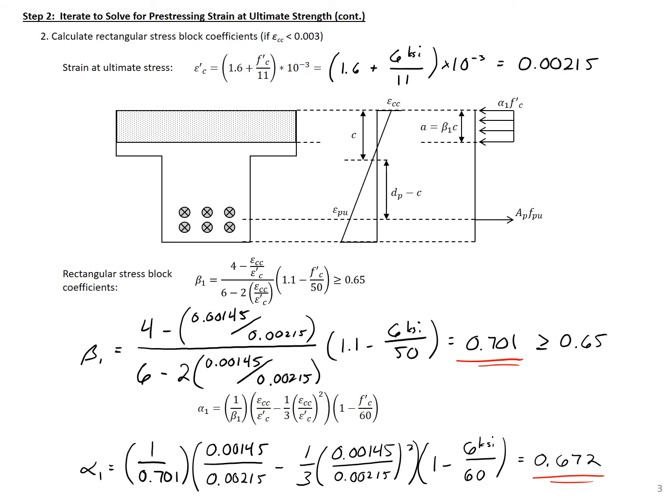Note that these alpha 1 and beta 1 equations were derived for CFRP strands. There is still ongoing research in this area, so I'm using these values because CFRP strands and high-strength stainless steel strands behave similarly. After the research on high-strength stainless steel is completed, these equations may change.